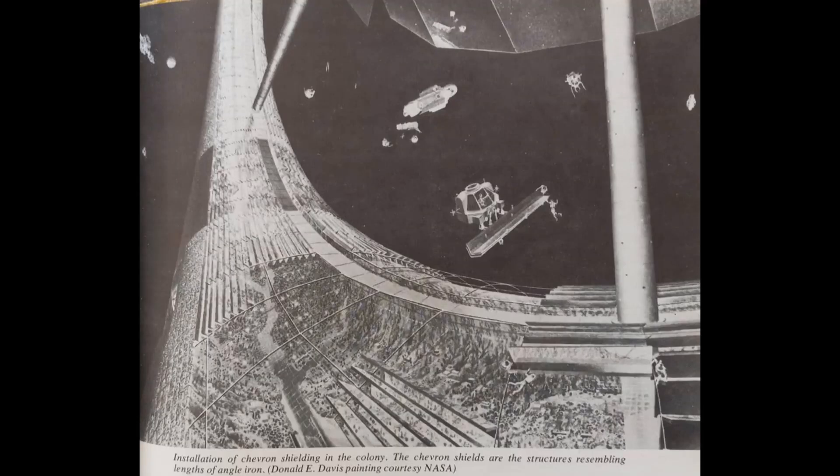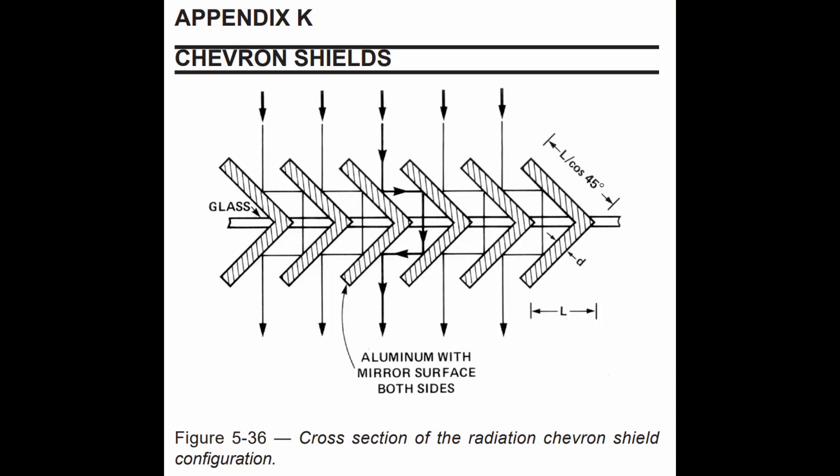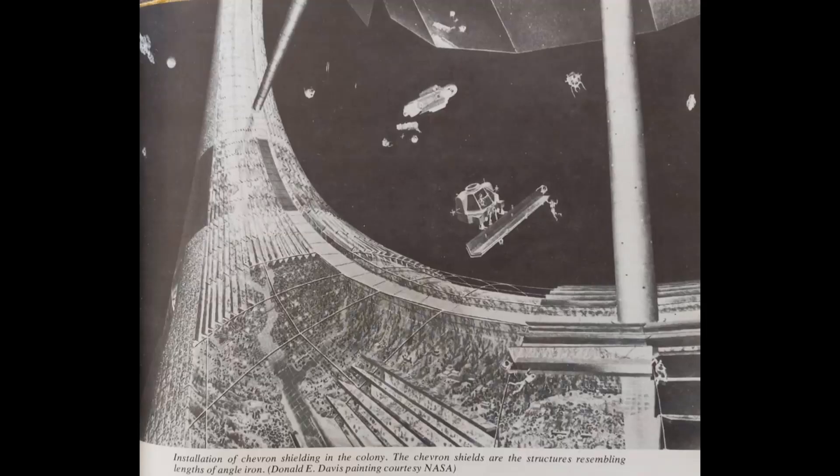And hopefully this makes it make a little more sense. You can see the ceiling of the habitat here and they're installing the caption calls them chevron shields. And what these do is they allow the sunlight to bounce its way through those mirrors down through the glass and into the colony while the thickness of the chevron shields themselves stops harmful radiation.